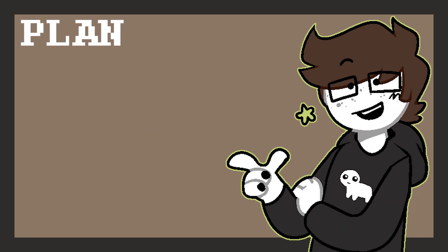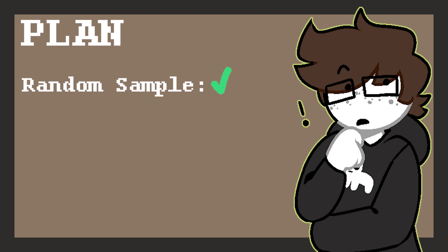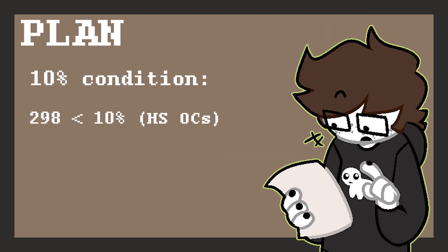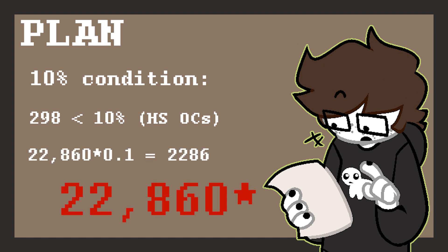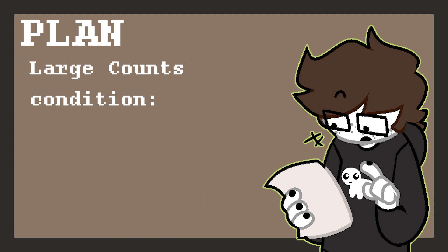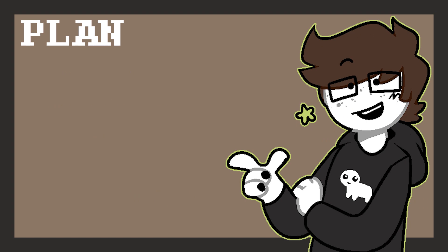Next, I'll check to see if the conditions to perform this test have been met. The random condition was discussed earlier, but the other two still need to be touched on. For the 10% condition, 298 is less than 10% of 22,680 Homestuck OCs. For the large count condition, the smallest observed value — hope with 17 points — is greater than 5, so I think it's safe to proceed with the procedure, though maybe with a little bit of caution due to the random sample mishap.